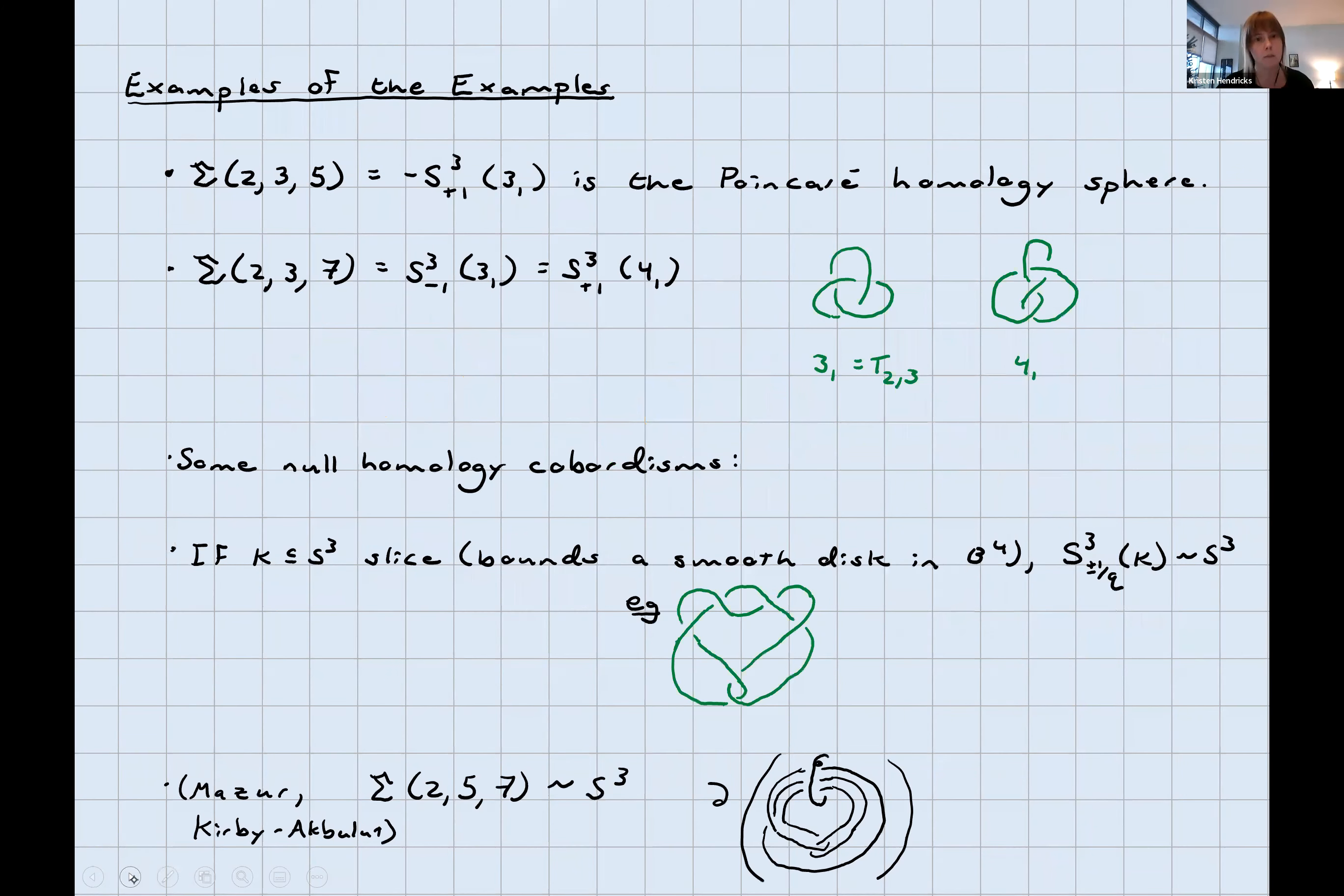Some examples of the examples. Sigma 2-3-5, which is also plus-one surgery on the trefoil with the orientation reversed, is a famous first example called the Poincaré Homology sphere. It's the only example of a finite fundamental group apart from the three-sphere. The fundamental group is the binary icosahedral group. And sigma 2-3-7, which is also minus-one surgery on the trefoil or plus-one surgery on the figure-eight knot, is also an example we might like to name later. If you're a slice knot, then plus or minus-one over Q surgery on you is null homology cobordant. Another famous example is that the Brieskorn sphere sigma 2-5-7 is null homology cobordant.